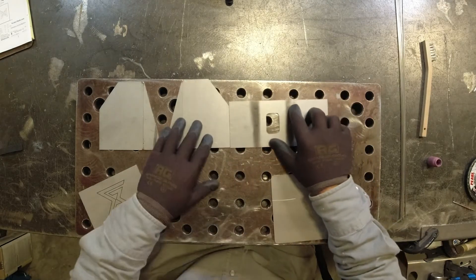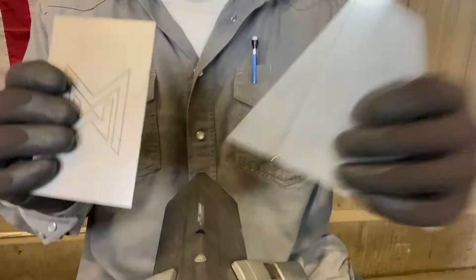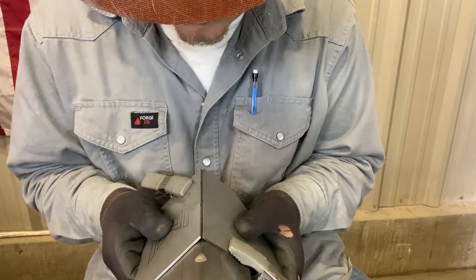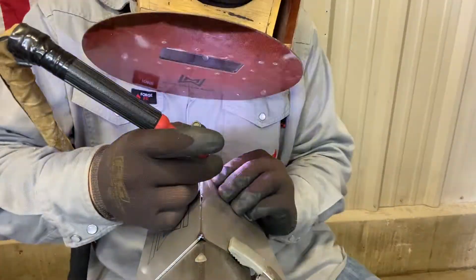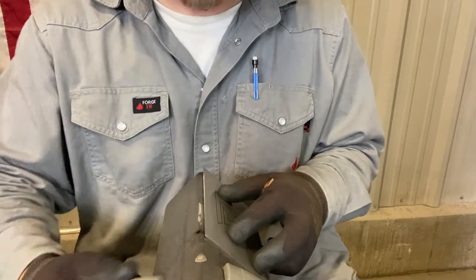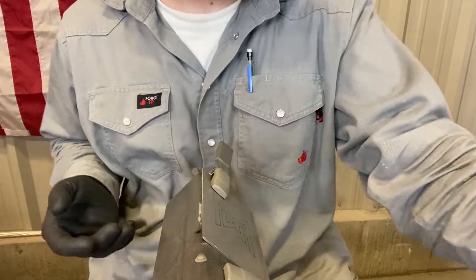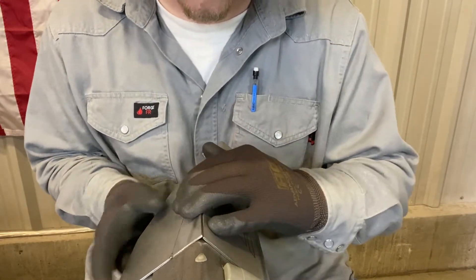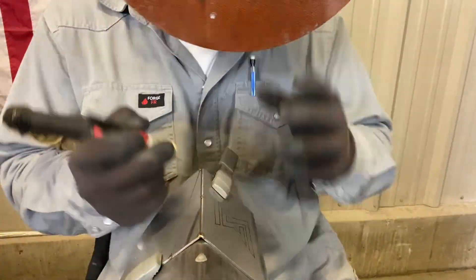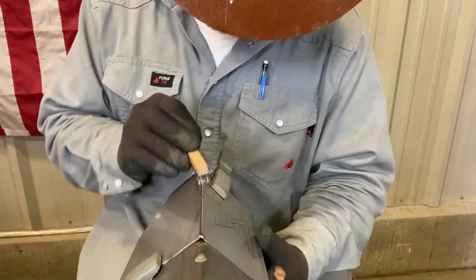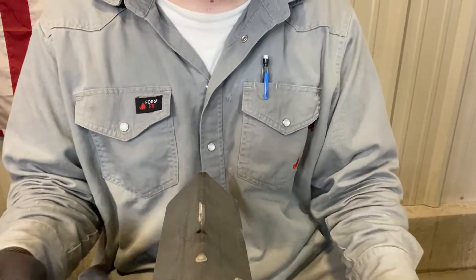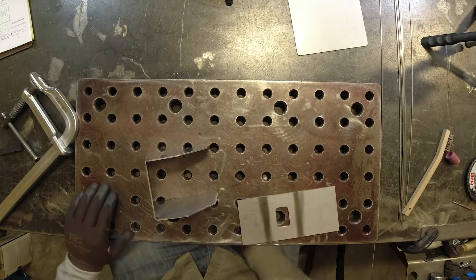Transfer over to the easy tack tool. We're going to tack our part seven onto our two and four assemblies. Flip it over, tack on the other side. Give them a nice little brush while they're hot, get rid of that oxidized layer, and we're good to go.